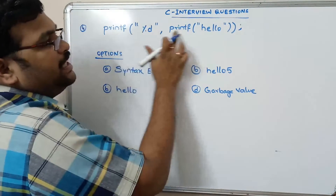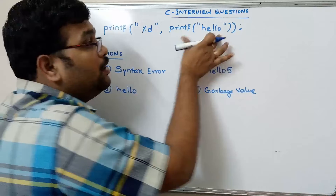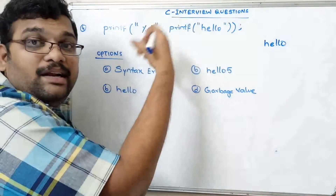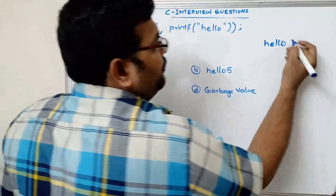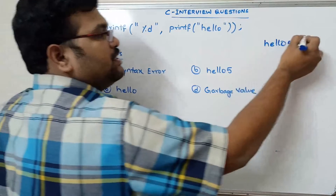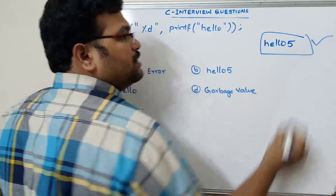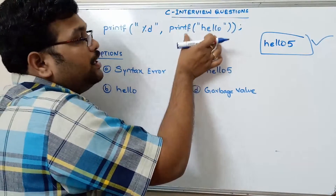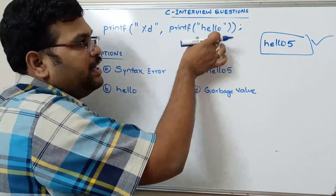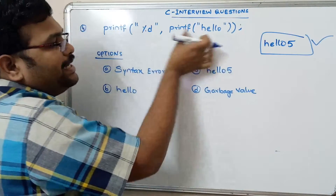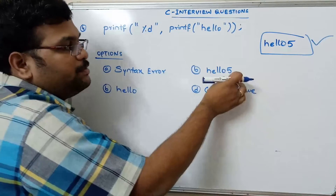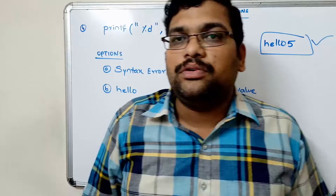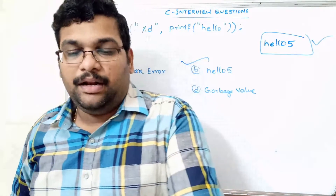So printf("%d", printf("hello")): first, printf("hello") executes and displays 'hello' on screen, then returns 5 (the number of characters). The outer printf("%d") then prints 5. So the final output is 'hello5'. The rule is: printf returns an integer equal to the number of characters displayed, and that value is then printed by the outer printf.